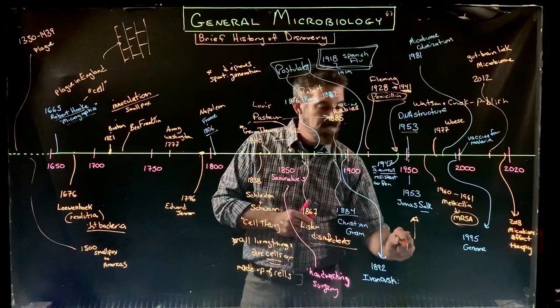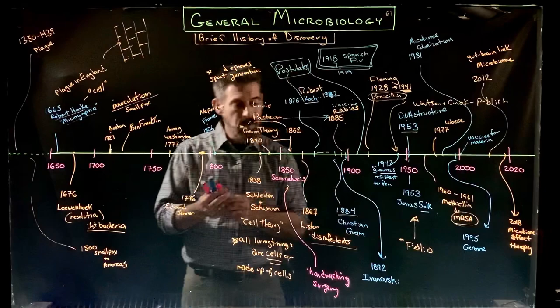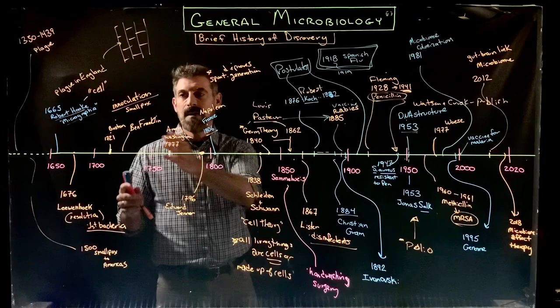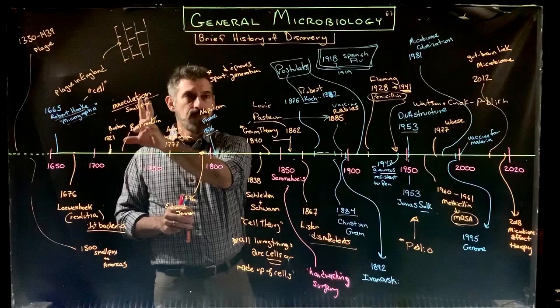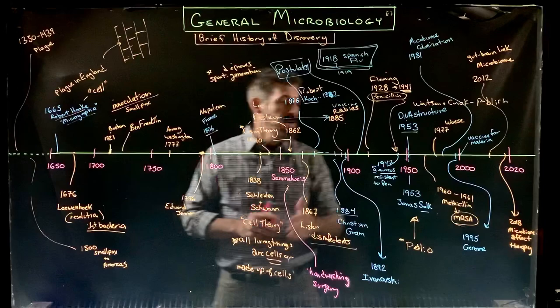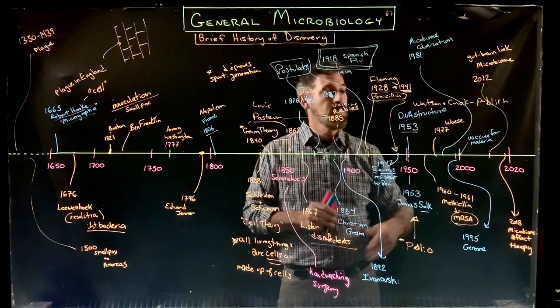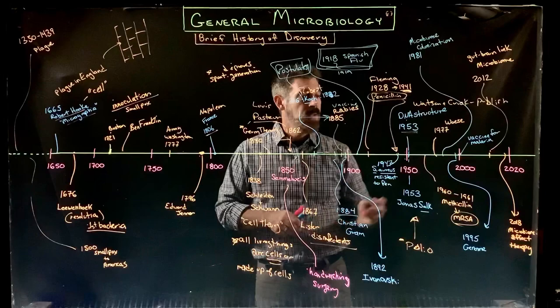That same year, 1953, Jonas Salk develops a vaccine for polio, which had been a major problem like smallpox. So all through time, from way back in the 1700s, there's been this idea — not quite a vaccine at first, but the concept of vaccination to help prevent the spread of disease — and we still have the development of new vaccines constantly ongoing. There's even a vaccine for malaria around the year 2000. All of those are important steps in the history of microbiology.